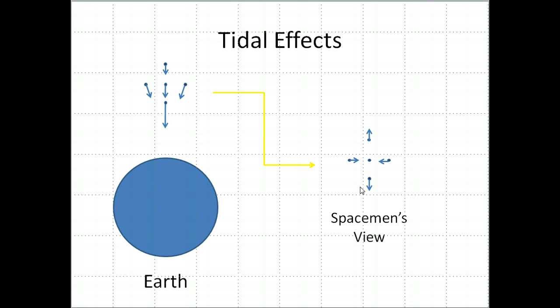Here's the spacemen's view. The spacemen are falling with the center object. If you ride on this center object, you're not going to think this guy is moving at all, but this one is being pulled faster so it will go away from you that way. This guy's being pulled less strongly, so it's going to go slower, and from the point of view of the middle object it's going to go upward. These guys are coming in, so it's going to look like this.